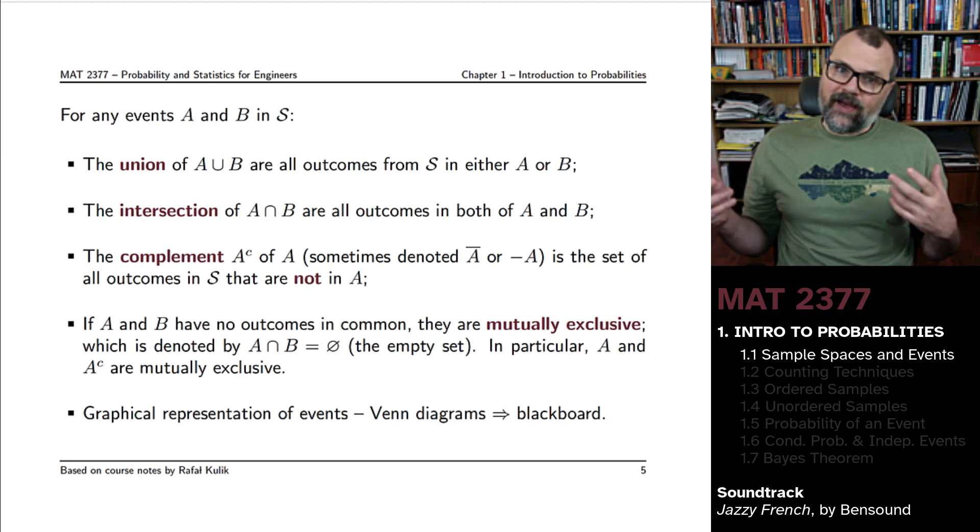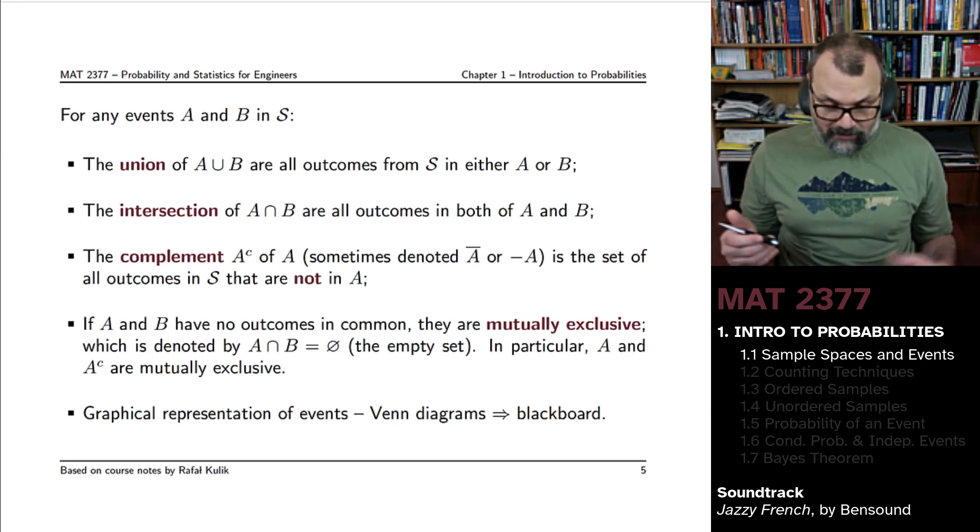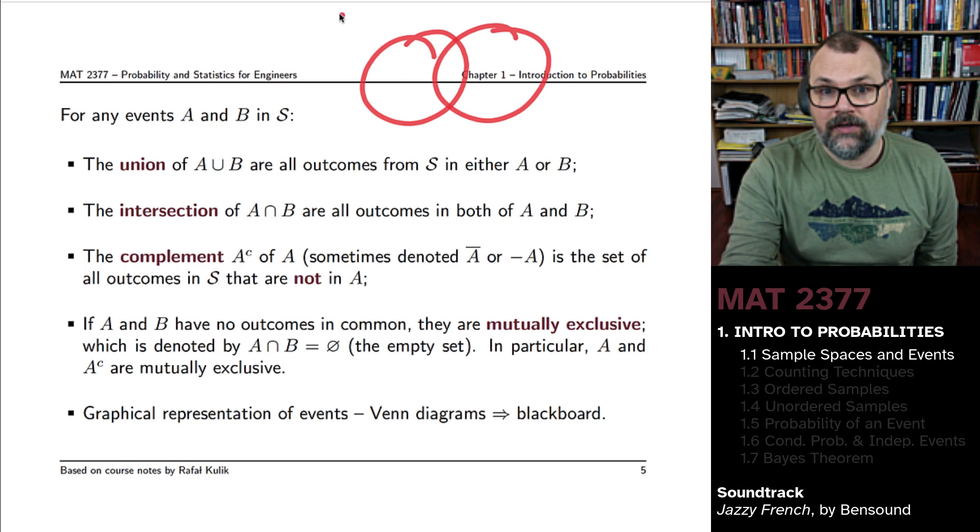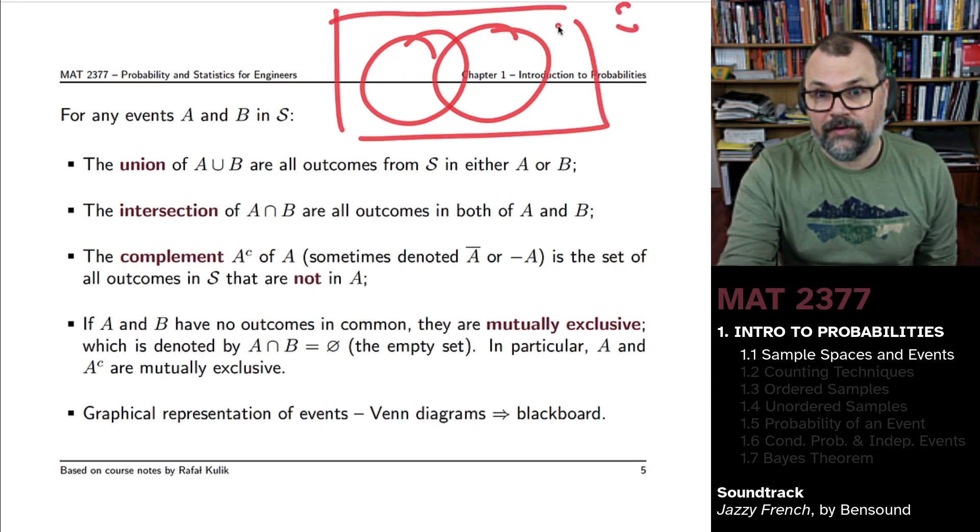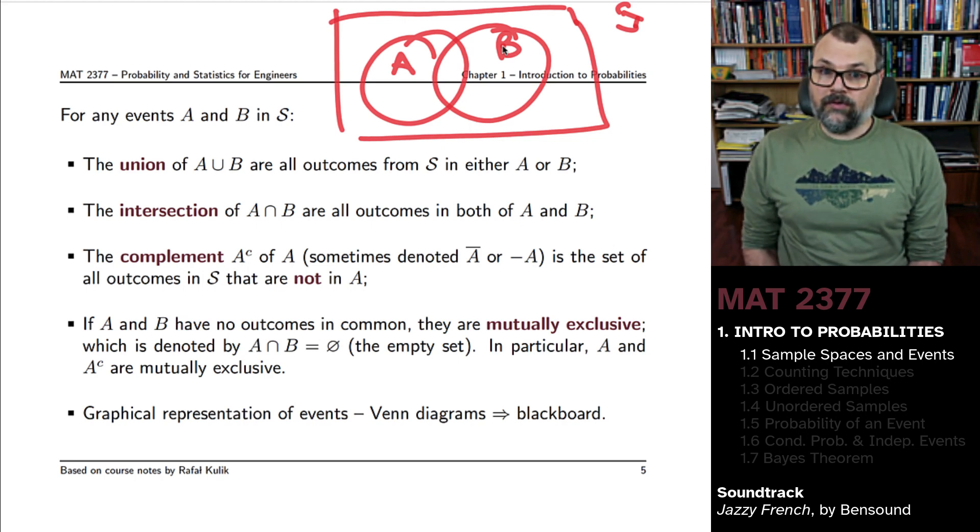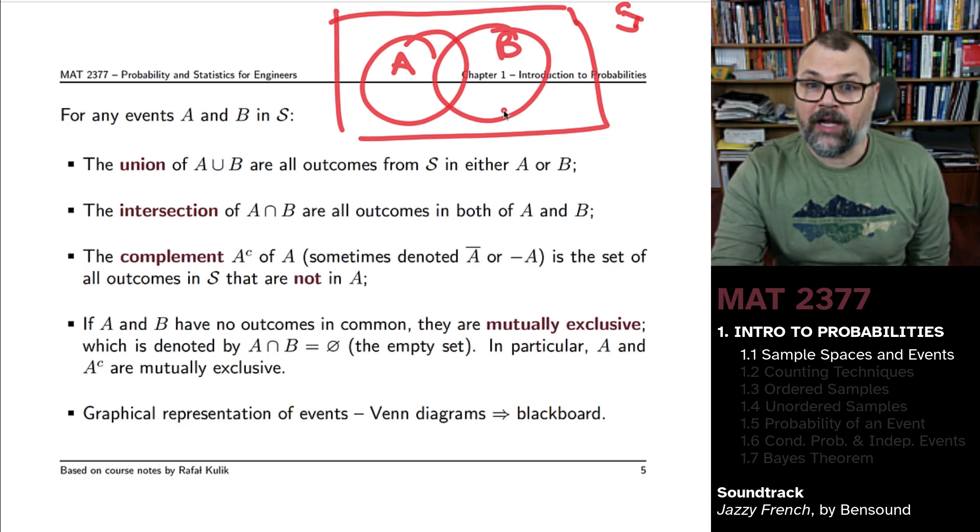If you take any two events A and B in S, any two subsets, and often we'll write those here like this - so here's your A, here's your B, here's your S, and you'll recognize your friend the Venn diagram. Then the union of these events will be all of the outcomes from S which are either in A or B.